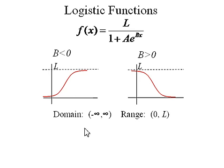So in either case, we have a domain of negative infinity to infinity, and the range is going to be from 0 to L. So the lower limiting value is always going to be 0. The upper is always going to be L, which if you look, comes straight from the function.